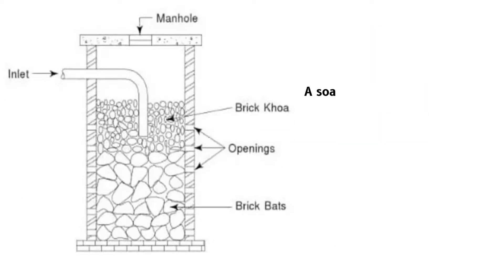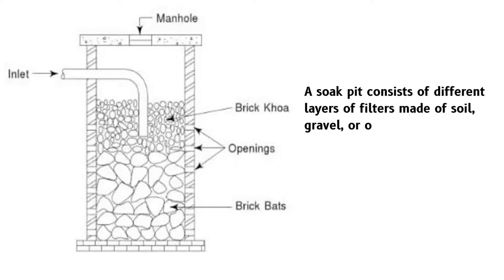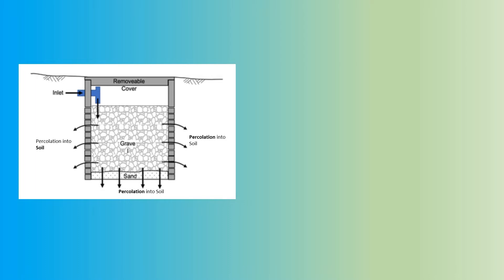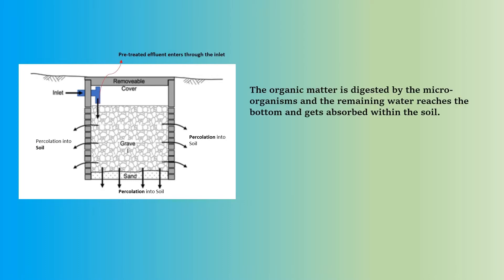A soak pit consists of different layers of filters made of soil, gravel, or other mediums enclosed within a small chamber. The wastewater — gray water and black water — after their pre-treatment, slowly percolates through this chamber. During the movement, the organic matter is digested by the microorganisms and the remaining water reaches the bottom and gets absorbed within the soil.